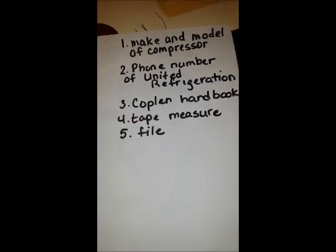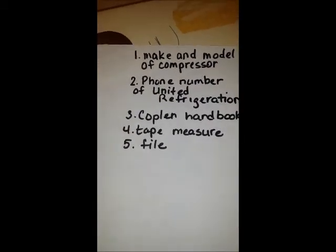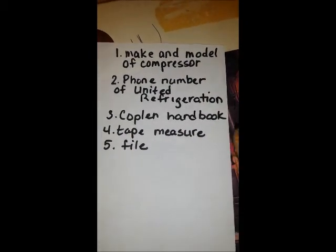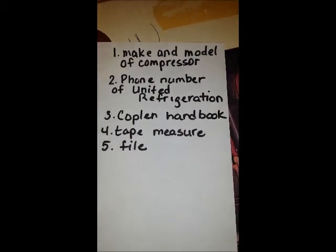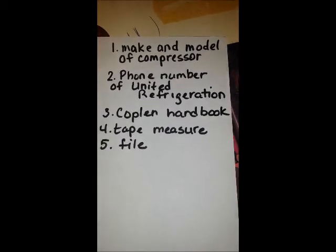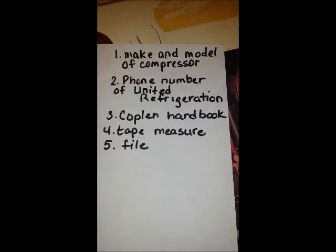You don't know how long it is or what the size of the capillary tube is or anything. So what you need to do is take the model and make of the compressor. If you have a Copeland handbook, you can look in there and it will tell you what the horsepower is and what the gas is for that particular unit. Or you can call United Refrigeration and give them the information on top of the Copeland or Tecumseh. They will tell you if it's 134A half horse or what it is.